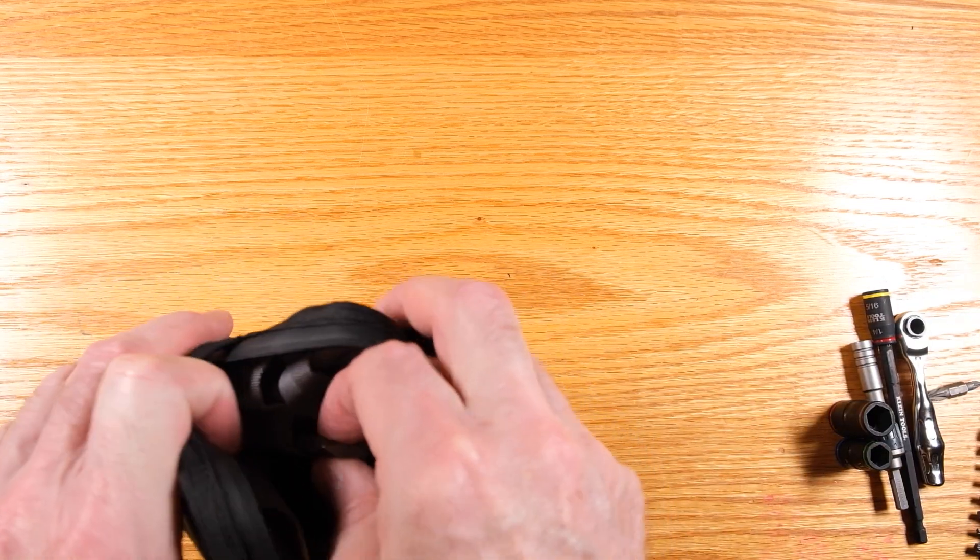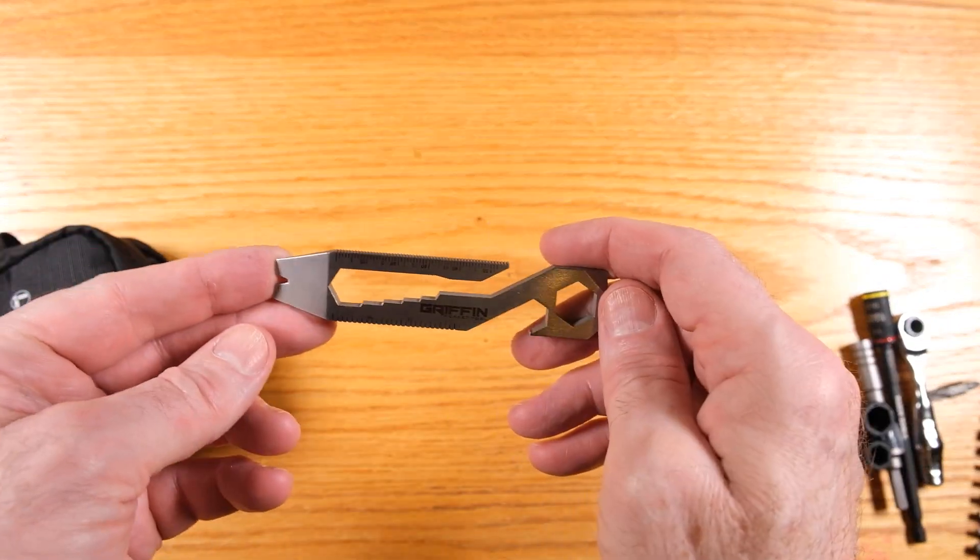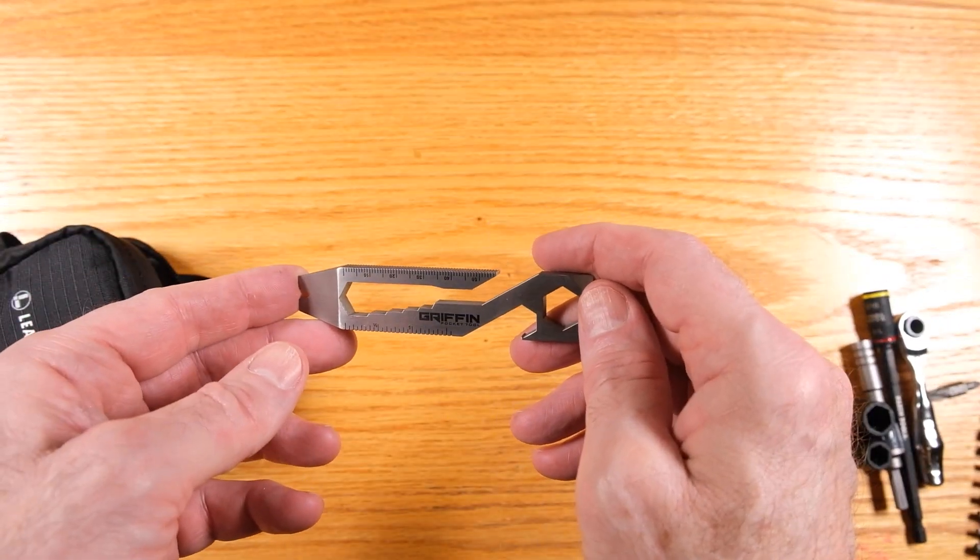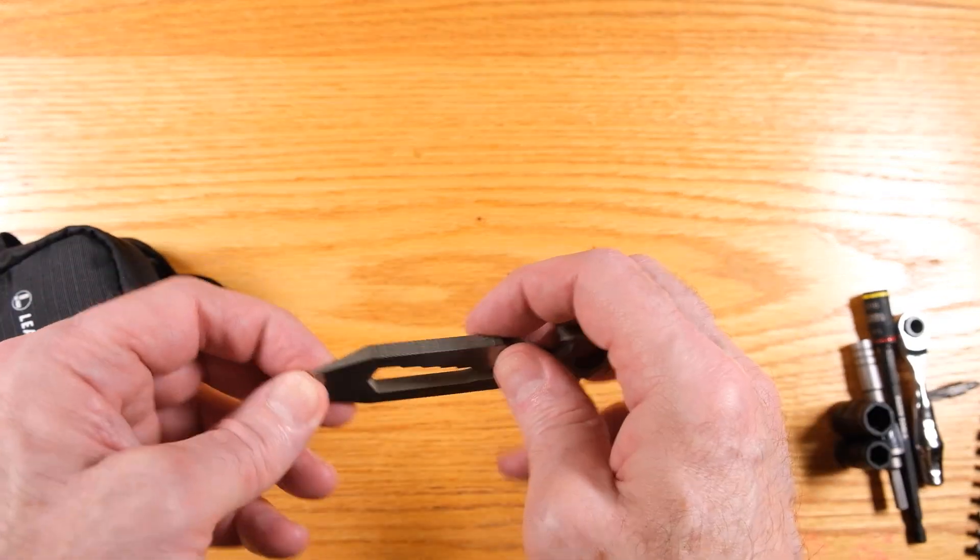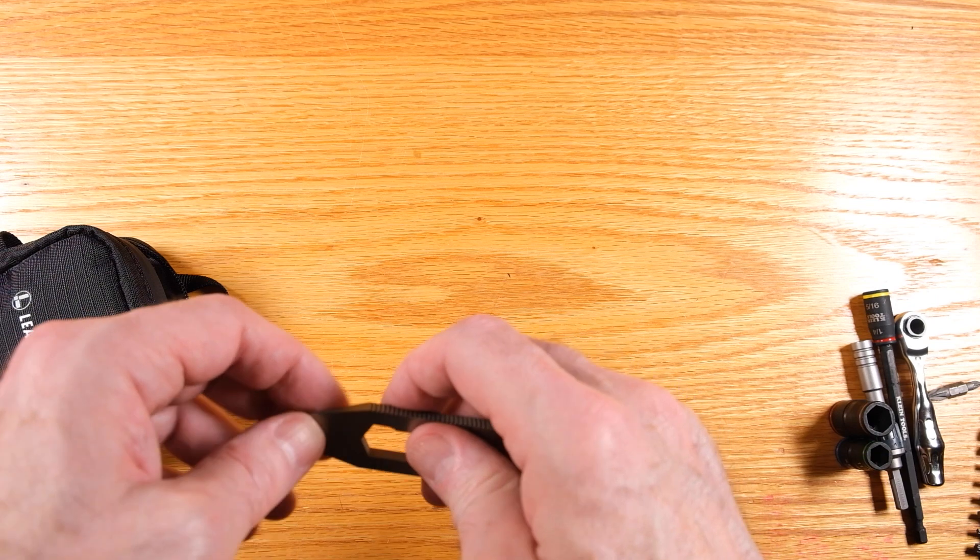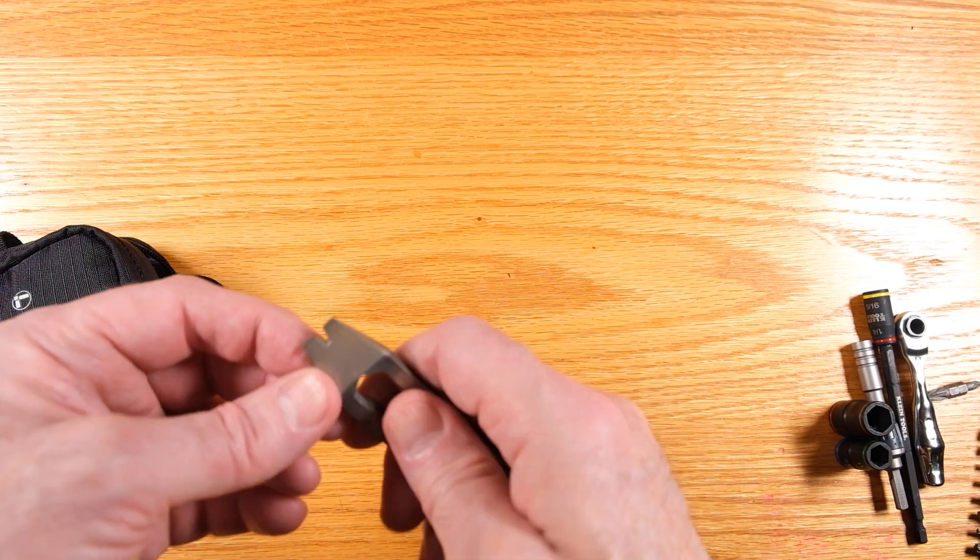Finally, well, nope, not quite. So two more things. This is a Griffin pry bar. This is a titanium pry bar. It's very light. You could pry a little bit probably with that big flat head on the Leatherman tool, but this is a lot stronger.